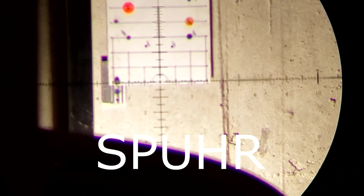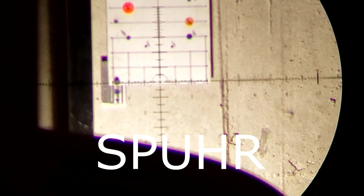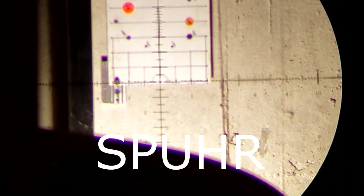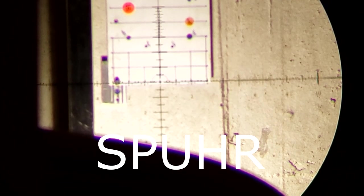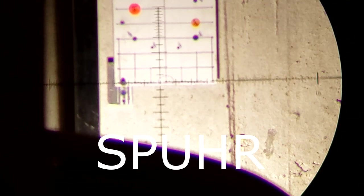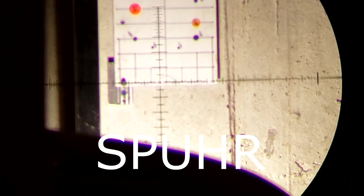All right, we're going to start with the Spur mount and my Steiner P4xi at 16x. Unfortunately, this is as good as it's going to look. I have the rings torqued down and I have the base torqued down to the rail at 40 inch pounds.